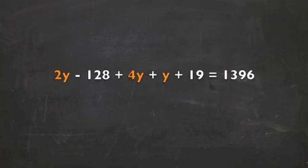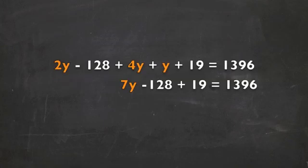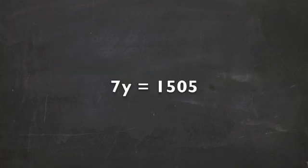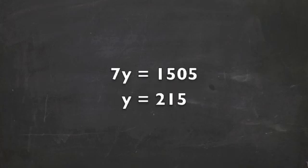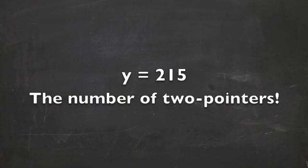Now we can combine like terms. Divide by 7, giving us 215, the number of two point field goals.